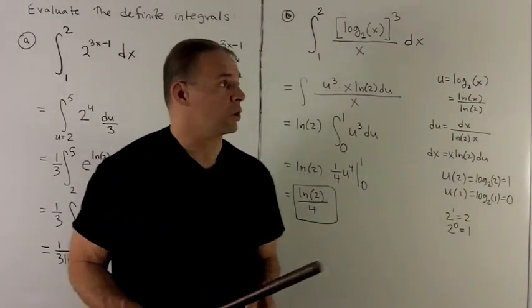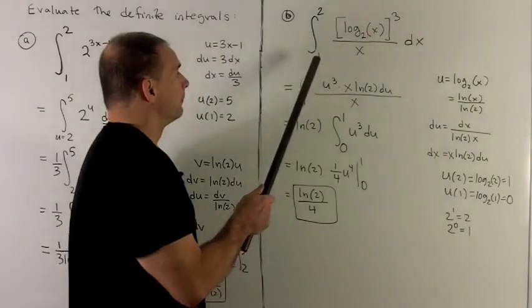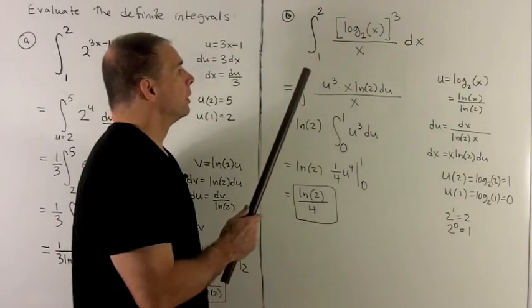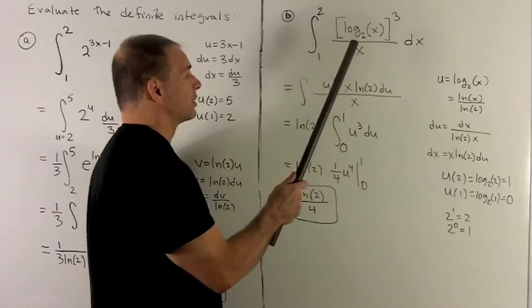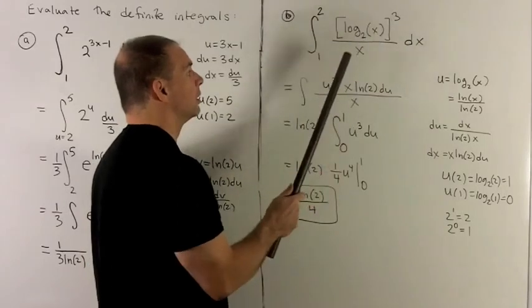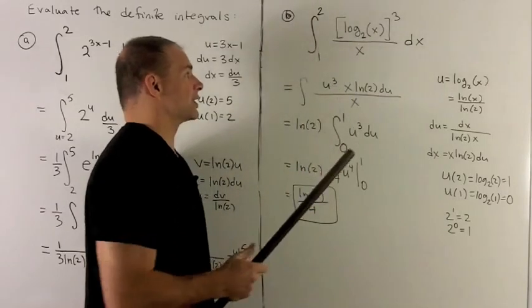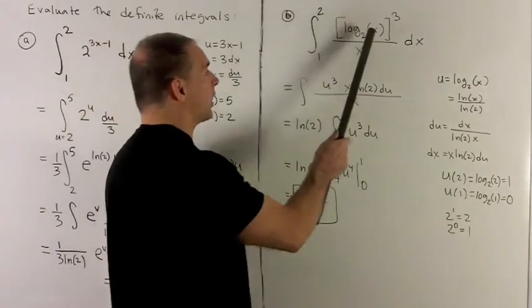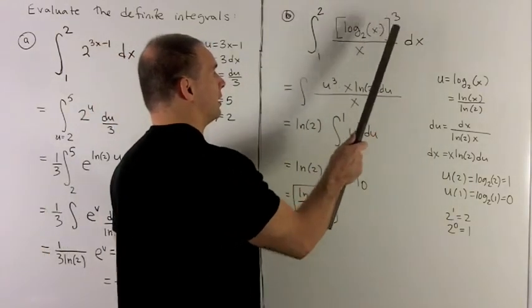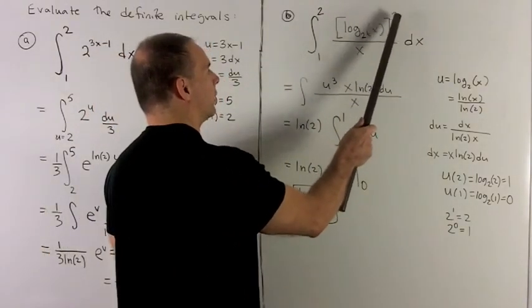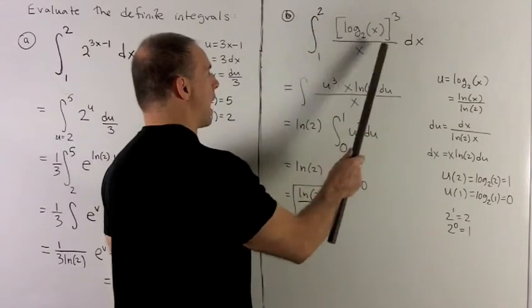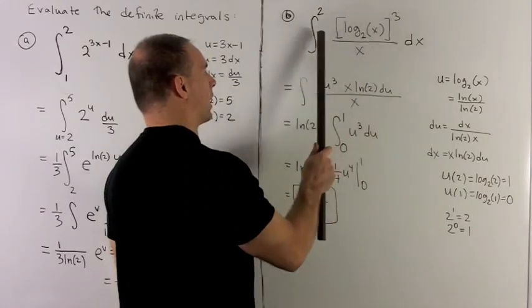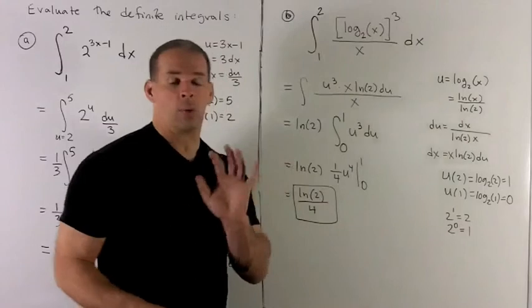Next definite integral, let's look at from 1 to 2 of log base 2 of x whole thing cubed over x dx. Now note, we have a log going on here. This cubed is not on the x term, so I really can't do anything with a logarithm rule. This isn't something that can be brought out to the front. So we just don't worry about it.